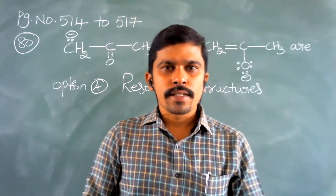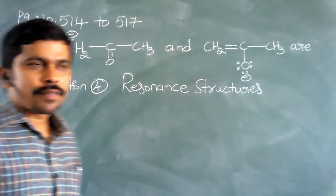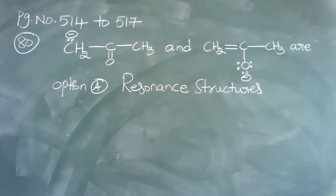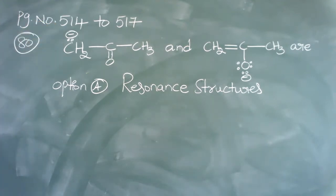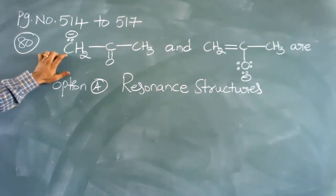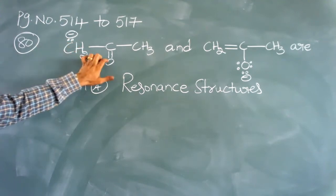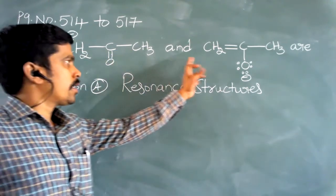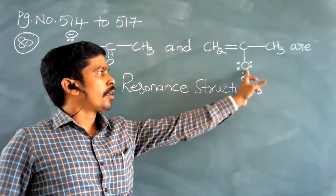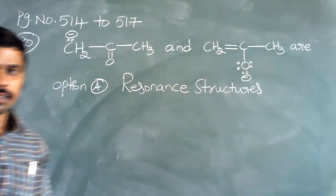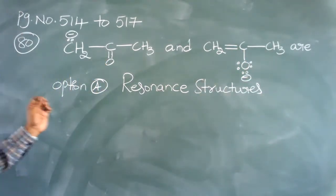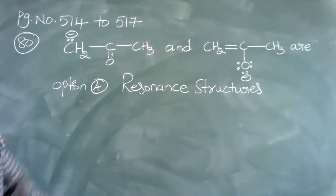Welcome students to the class. Today we are going to discuss some previous MCQs from your material, page number 514, 251, 7. Question number 80: CH2 minus single bond C double bond O single bond CH3 and CH2 double bond C single bond O minus single bond CH3. The answer is option A, that is resonance structures. What are meant by resonance structures?